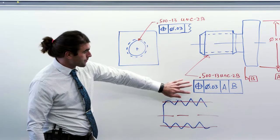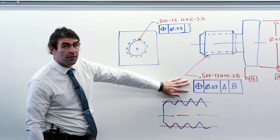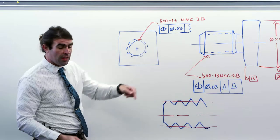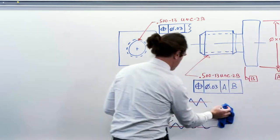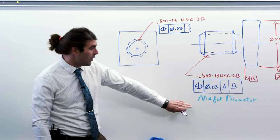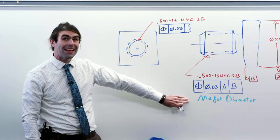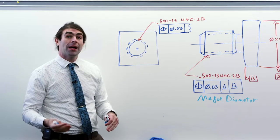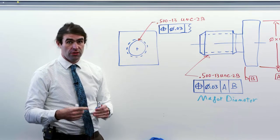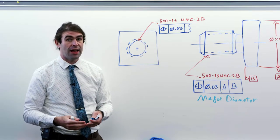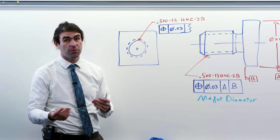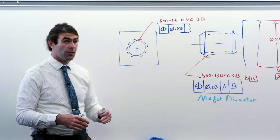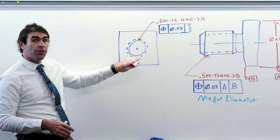As a default requirement, you have to measure the pitch cylinder to find out if this thread is within its position tolerance. But you can very easily, underneath the feature control frame, indicate that this should be inspected at the major diameter. The thread might not locate as well, but it's much easier for inspection. That's a conversation you have to have between design and inspection about what kind of requirements you're looking for. We can do the exact same thing for a threaded hole.